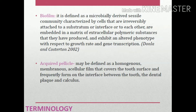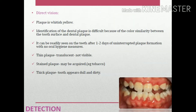For plaque detection by direct vision: plaque appears whitish-yellow, but because of color similarity with the tooth it is difficult to distinguish. It can be readily seen after one to two days of uninterrupted plaque formation when the patient does not follow oral hygiene measures. Thin plaque is translucent and hardly visible. Stained plaque — from tea, coffee, or tobacco — becomes visible. Thick plaque makes teeth appear dull and dirty.